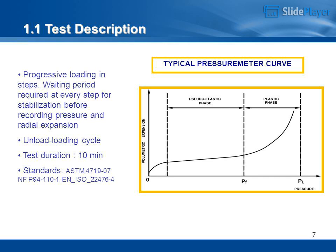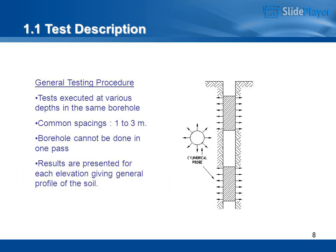The test involves progressive loading in steps, with a waiting period required at every step for stabilization before recording pressure and radial expansion, plus an unload-reload cycle. Test duration is approximately 10 minutes. Standards: ASTM 4719, NFP 94-110, N-ISO-22476-4. Tests are executed at various depths in the same borehole, with common spacings of 1 to 3 meters. The borehole cannot be done in one pass. Results are presented for each elevation, giving a general profile of the soil.